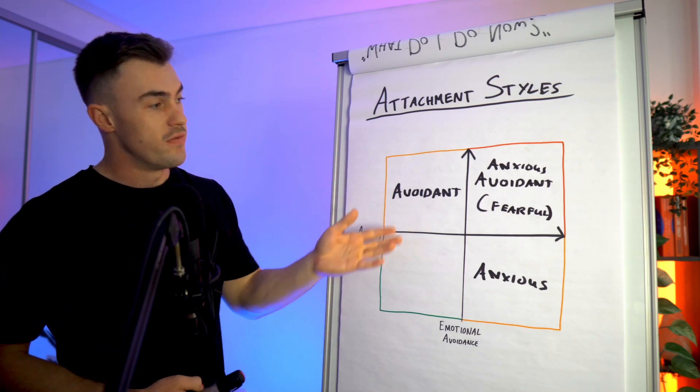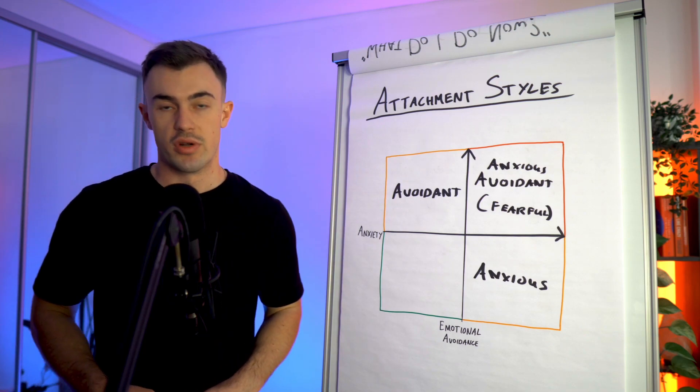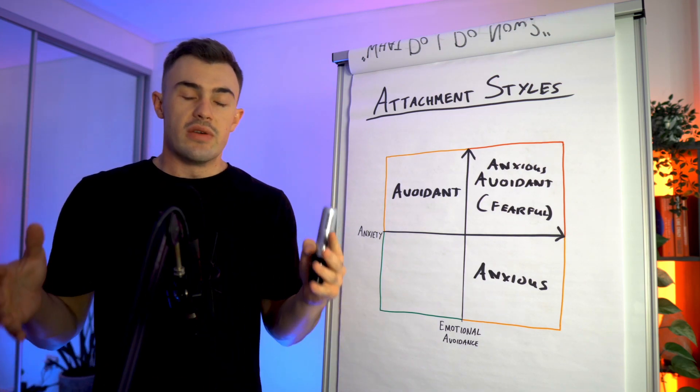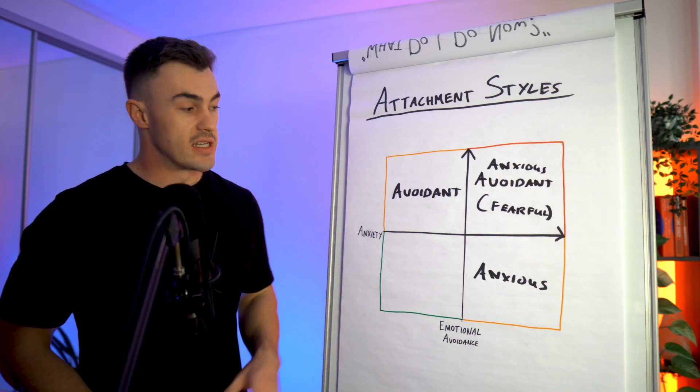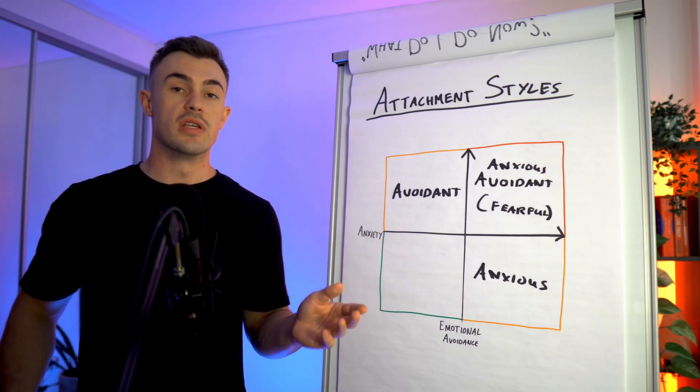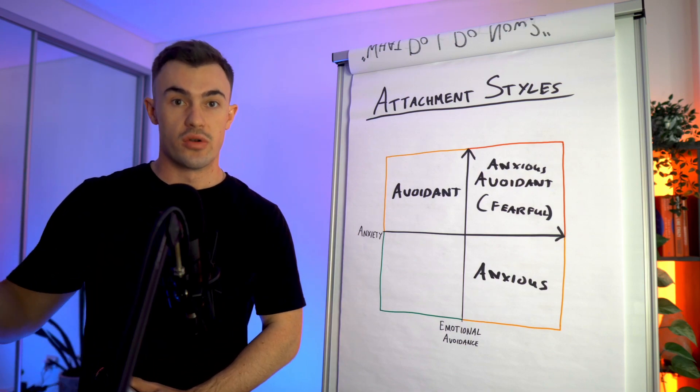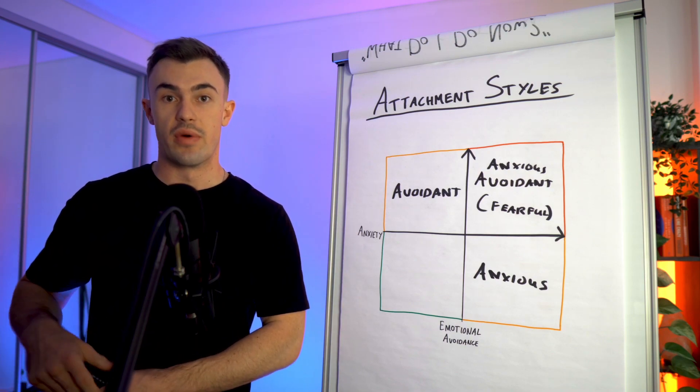So essentially the fearful or anxious avoidant attachment style, whichever one you want to call it, really were brought up in an environment where neither of the parental needs were met. So essentially not only were they given too much freedom and they weren't coddled or loved or reassured in any way, they were also...